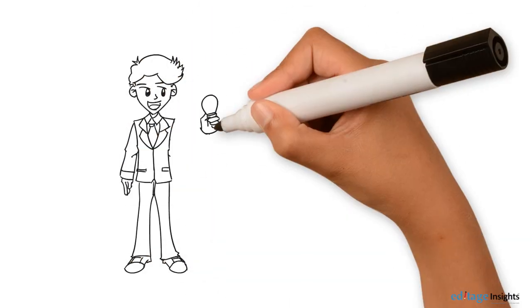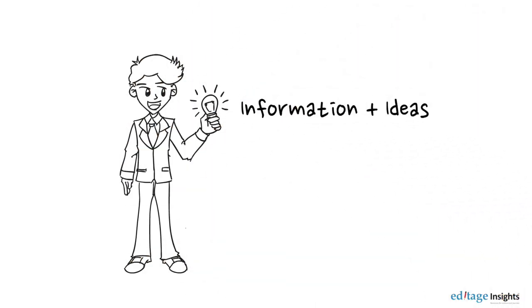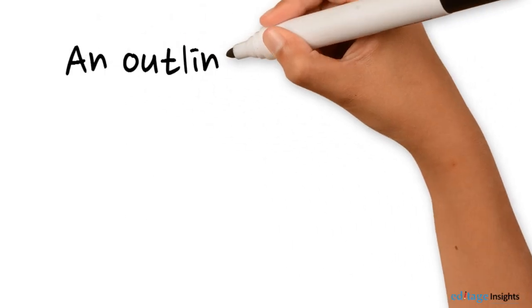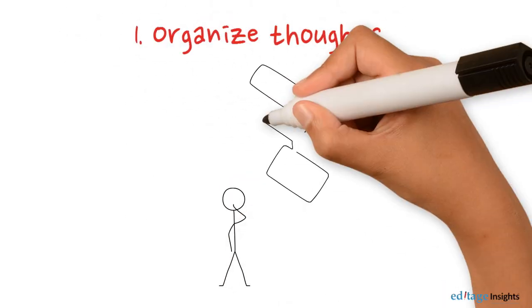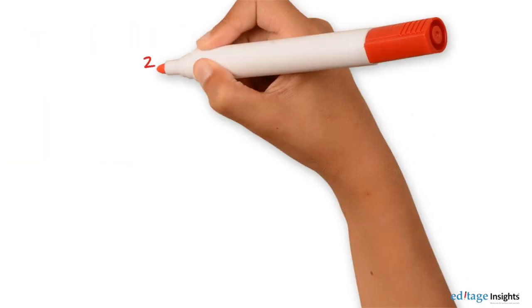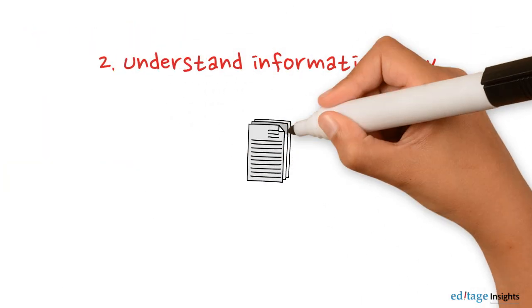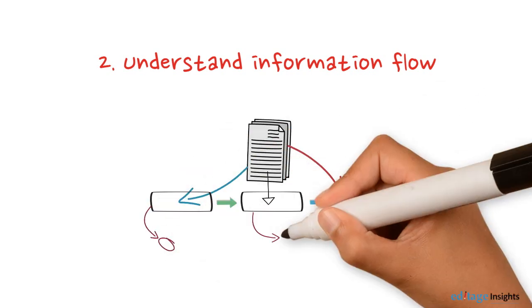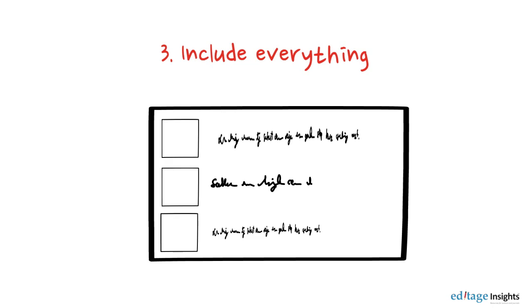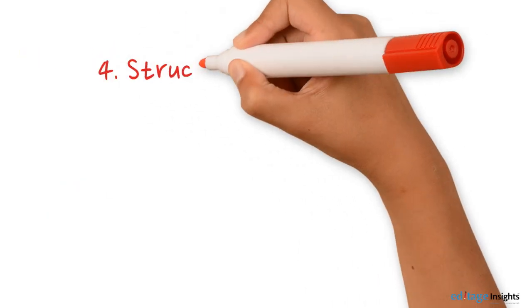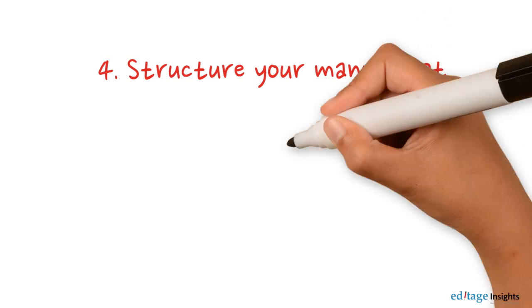When you conduct research, you collect a lot of information and ideas. A research outline can help you organize your thoughts better, understand the flow and levels of information in your research, ensure that you don't miss anything while writing, and prepare a well-structured, neatly organized manuscript.